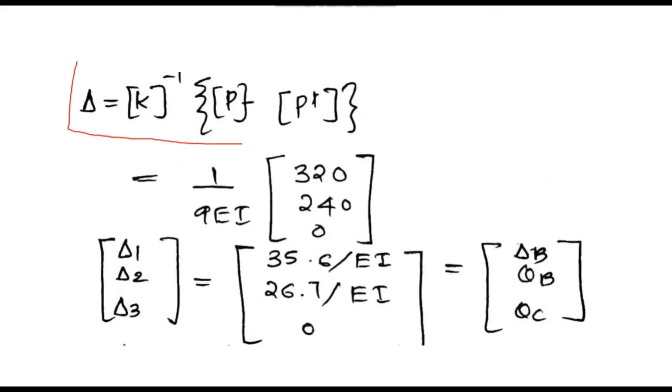Using the equation delta equal to matrix K inverse into P matrix minus P' matrix, we will get the values of delta B, theta B and theta C.